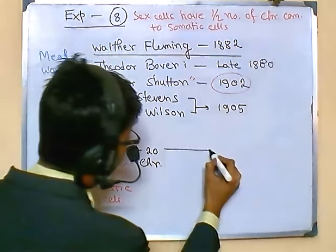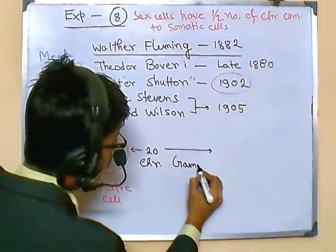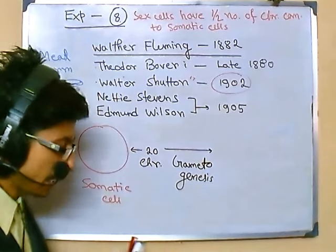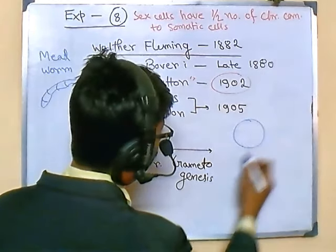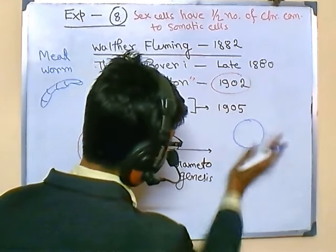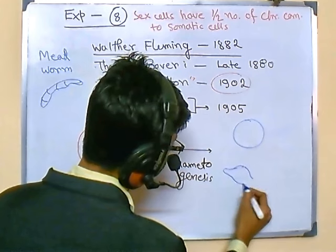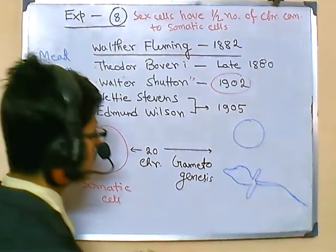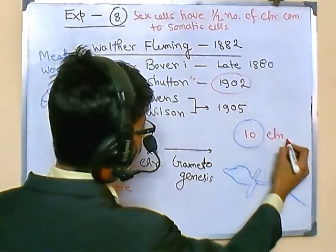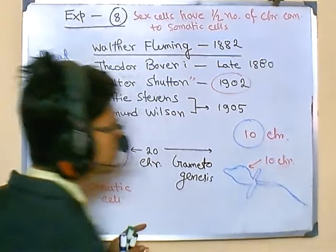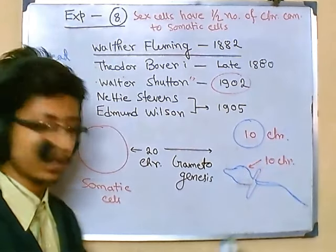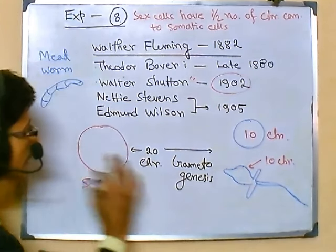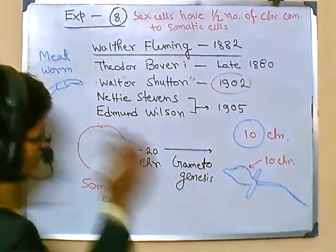Among those 20 chromosomes, once they go through gametogenesis — the production of sex cells like sperm and egg — the number of chromosomes reduces to half. So now there are 10 chromosomes in each egg and sperm, compared to 20 chromosomes in the somatic cell.